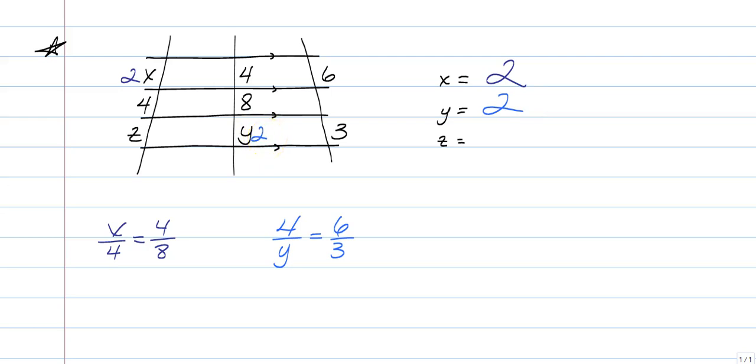So from here, again, you could do this multiple ways. You could do two over Z is equal to four over two. You can do four over Z and eight over two. You can do two over Z and six over three. So many different ways to find Z once you have found X and Y. So I'm going to just do four over Z is equal to eight over two. Now that I know what Y is, cross multiply, and we get Z is equal to one.